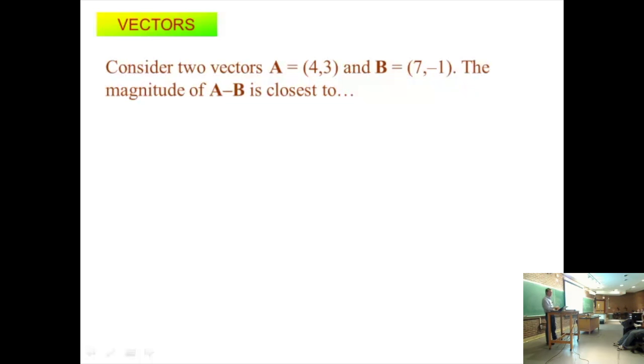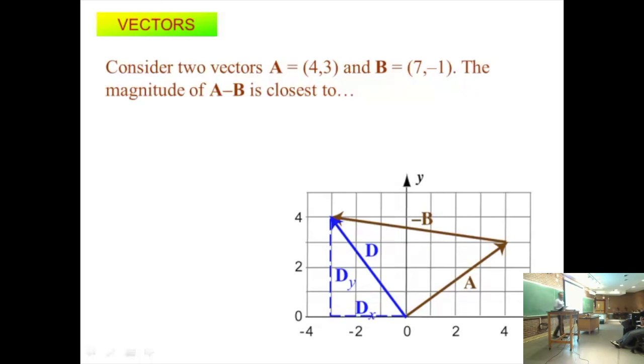You got these two vectors A and B. The magnitude of A minus B is closest to what? Well, how would I solve this problem? What's the first step? Draw a quick picture. So I draw a quick picture. A goes this way. Negative B goes the other way. I can do a quick sketch. That's my D. That tells me something. It tells me that my Y component needs to be a positive number, and my X component needs to be a negative number, because the vector is pointing to the left.